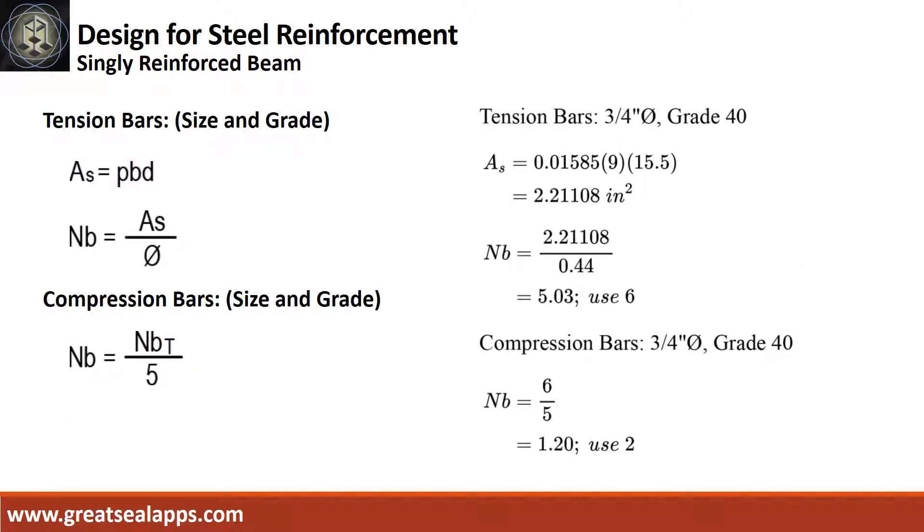Given rho equals 0.01585, B equals 9, and D equals 15.5. The area of steel for tension bars is 2.21108 square inches. The number of bars for 3/4 inch diameter is 6. The number of compression bars is 2.